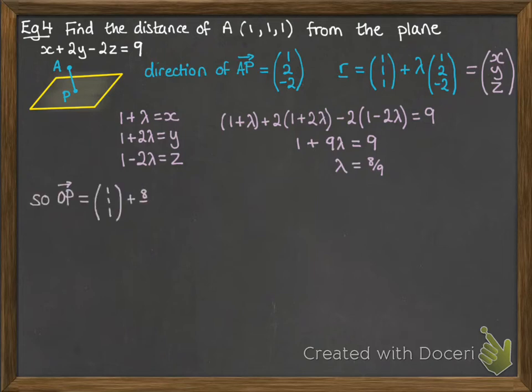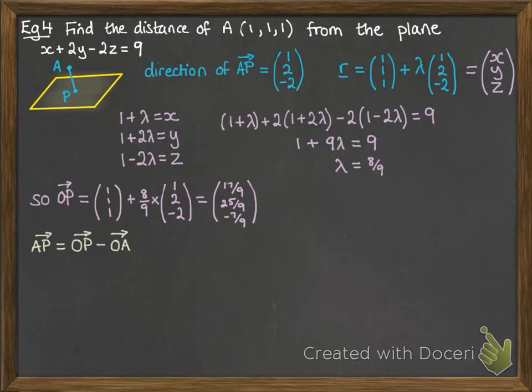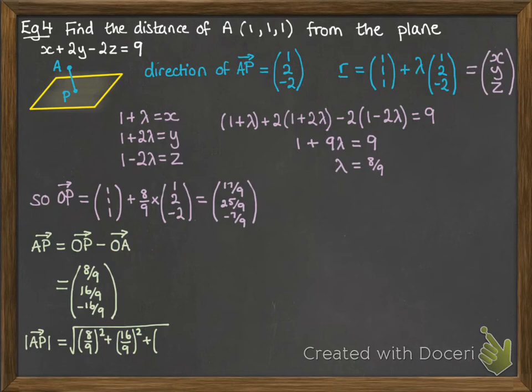So, moving on from there, our position vector for P will be putting 8 ninths into our equation for the line. Now, from here, this is probably the way you're most likely to think, is to work out the length of AP. We'll subtract those two position vectors so that we can get the vector of AP, and then we'll find the modulus of that vector, like this. That gives us a final answer of 8/3.